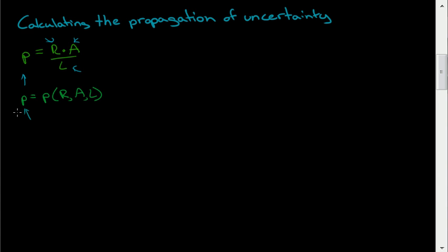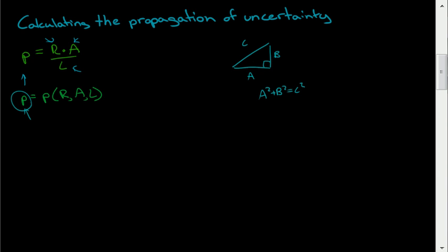The way we do this is sort of like Pythagoras' theorem. Pythagoras' theorem says that if we have A and B, and we're trying to find the length of the hypotenuse C, then it's just A squared plus B squared equals C squared. To calculate the final absolute uncertainty of P, we do something similar. Delta P — and by delta I mean the absolute uncertainty.